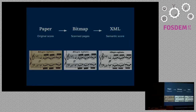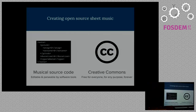So how would you go about doing that? It's a two-step process. You start from the original score, and then you have to get it onto a computer somehow, so we need to scan it and convert it into a bitmap image. But the next step is we want to turn it into a semantic score — something that we can play and extract data from. The end result is the actual musical source code in an XML format, which is editable and parsable, and we're going to release it under a Creative Commons license so everyone is able to do whatever they want with it.